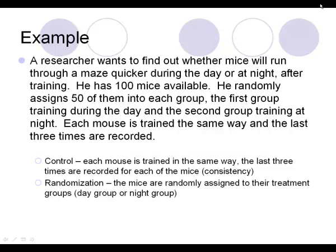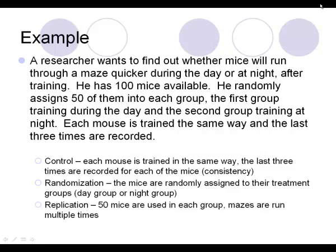Randomization: the mice are randomly assigned to their treatment groups — whether they go in the day group or the night group. It's not like the mouse gets to choose. Replication: 50 mice are used in each group, and the mazes are also run multiple times. Both of those count as replication.